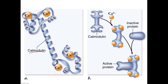Calmodulin is inactive except when calcium is bound to it. When calcium is bound, calmodulin can activate other proteins that become active by binding to it. So calmodulin is a kind of master regulator which in turn is regulated by the binding of calcium.